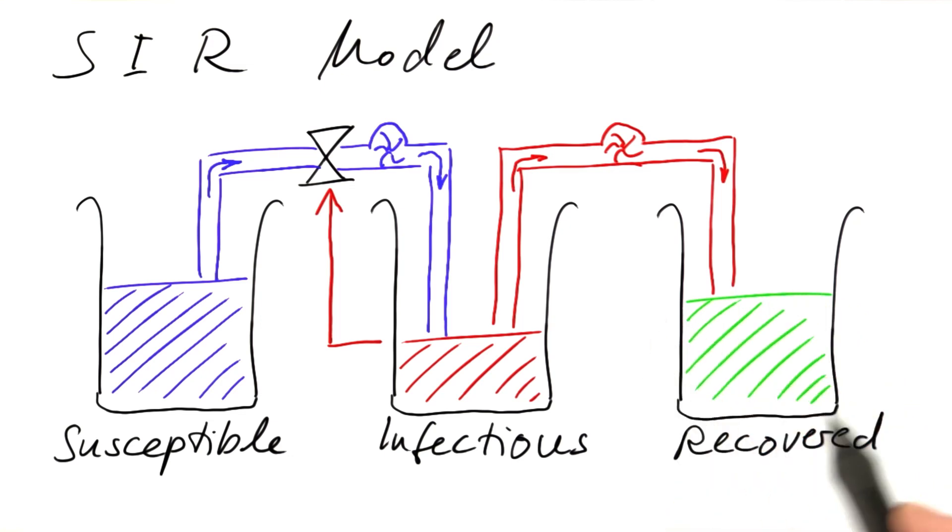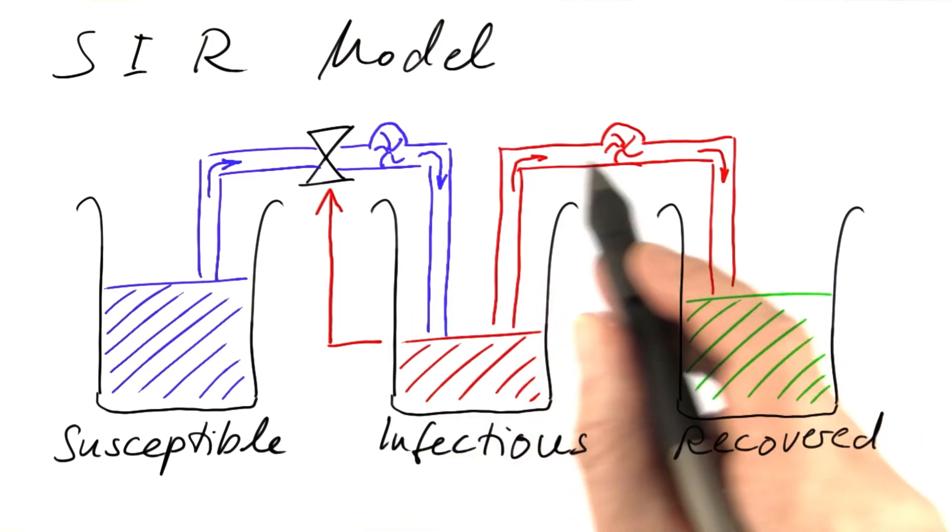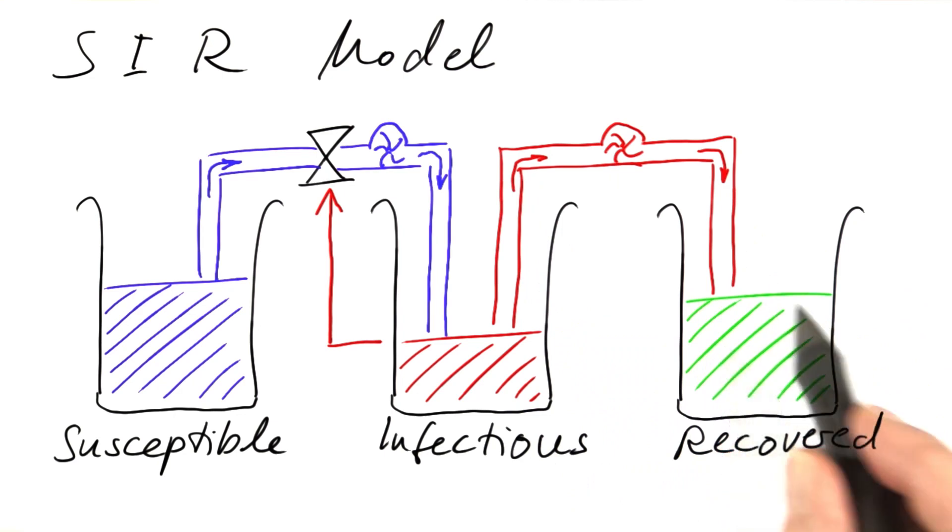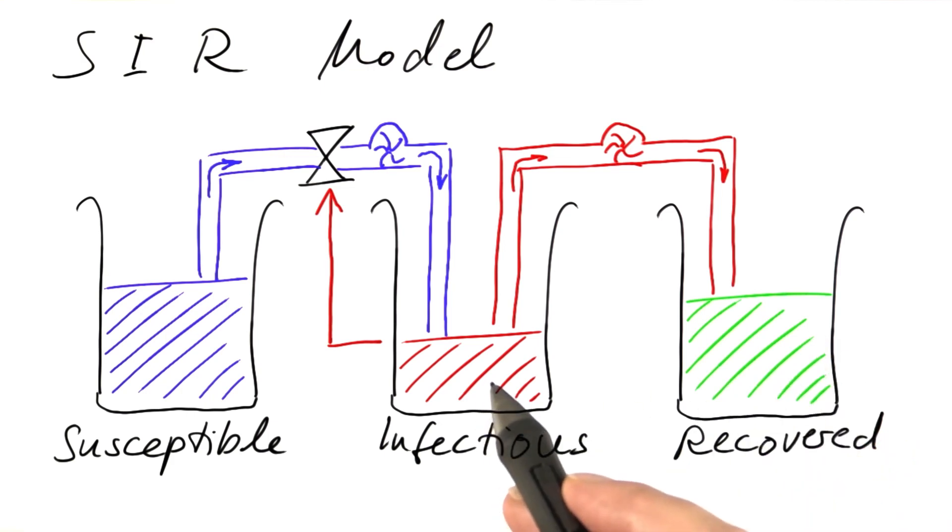Hopefully, people are going to recover from that disease. So there is a process that takes us from infectious to recovered. And in the standard version of that model, we assume that the recovered persons are immune and cannot be infected again. So they form a third compartment.